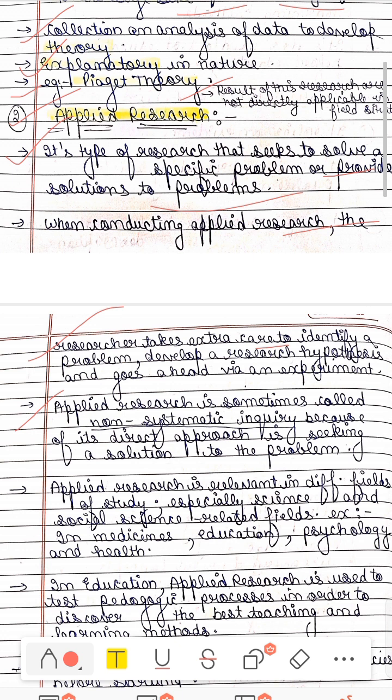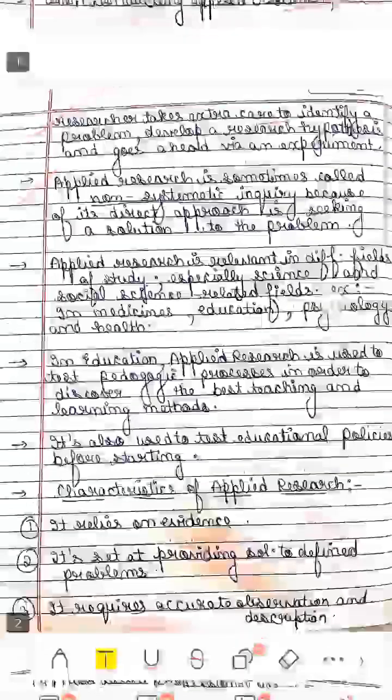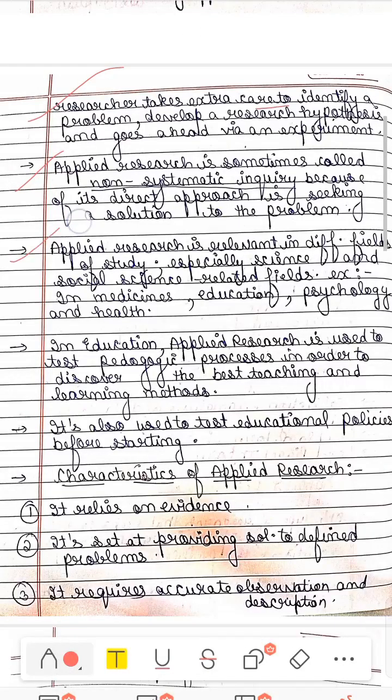Then the applied research is called non-systematic inquiry. It is called non-systematic because it is a direct approach, which is looking at the solution. Then where is it relevant? It is important. There are many fields in the study, such as science especially, and social science related fields, in medicine, in education. You have to research any problem, you have to find a solution in psychology, in health. All these are applied research. You apply it.